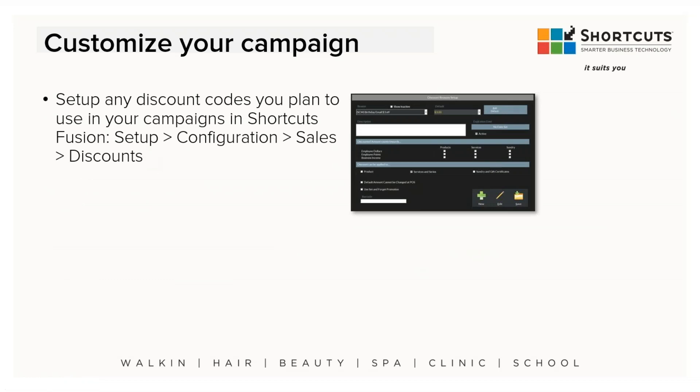Remember that when you're sending out a campaign that has a coupon or voucher, you always set those up in the Shortcuts point of sale first. The birthday email is usually the most popular. Whether it's worth a percentage or a dollar amount off a service or product, set that up first — because when you go to Marketing, Shortcuts will identify all of the discounts you've already created in the point of sale.